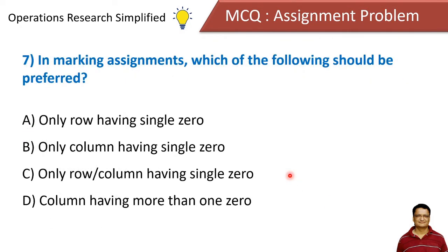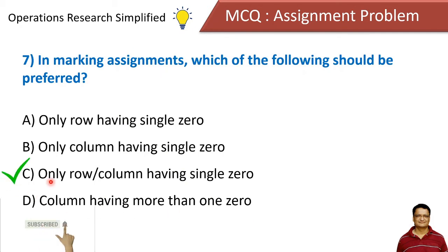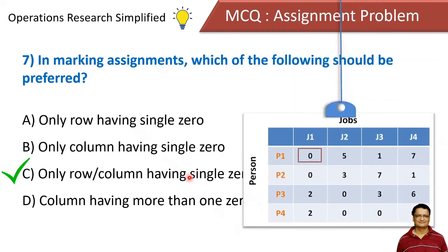In marking an assignment, which of the following should be preferred? Options: only a row having a single zero, only a column having a single zero, any row or column having a single zero, or a column having more than one zero. The answer is C — we prefer any row or column with a single zero. When making assignments in the reduced matrix, we look for the row or column having only one zero.